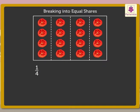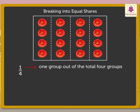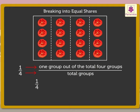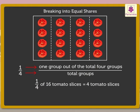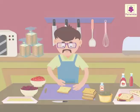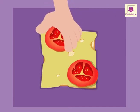We read it as 1 fourth of 16 is 4. Here the fraction is 1 upon 4, and the numerator 1 denotes the 1 group out of the total 4 groups. It means 1 fourth of 16 tomato slices is 4 slices. So Uncle Sam used 4 tomato slices.